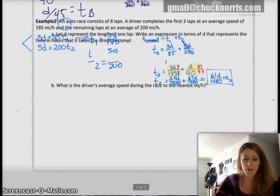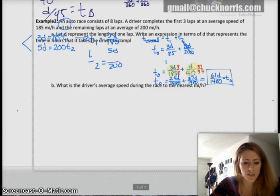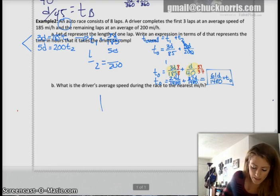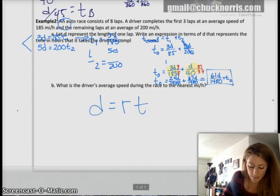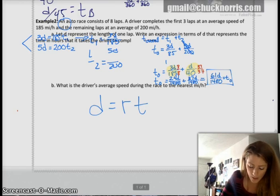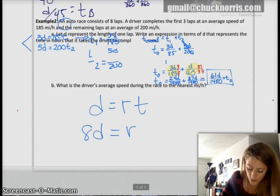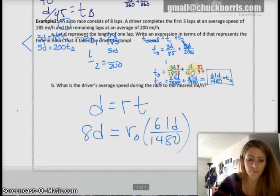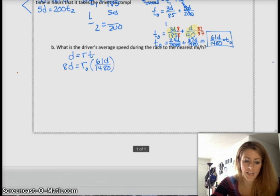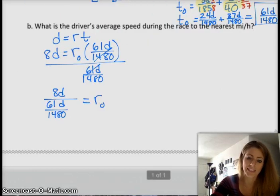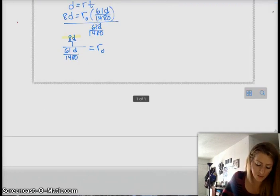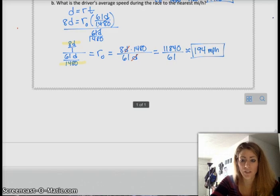So, now I've done the majority of the work for part B. It says what's the average speed during the race to the nearest miles per hour. I just want to set up my distance equals rate times time thing again. But in this case, my distance is going to be 8d because, remember, d was one lap and the entire race is eight laps. So, I end up with 8d equals my rate overall times my time overall, which I already figured out is 61d over 1480. Divide both sides by 61d over 1480. And I'm going to rewrite 8d as 8d over 1, do outsides over insides, and then simplify. When you simplify, the d's cancel and you end up with 194 miles per hour. Yay! Bye!